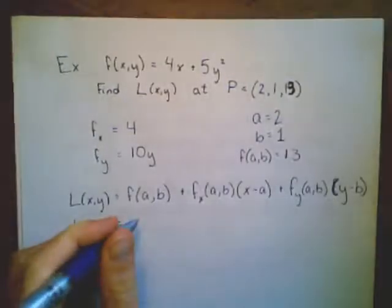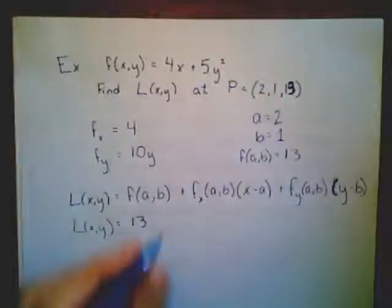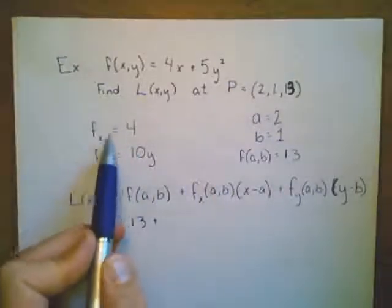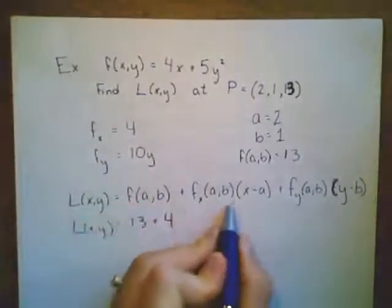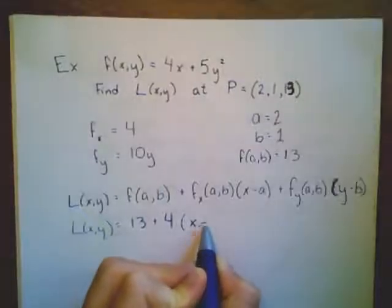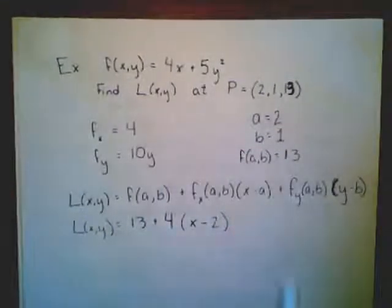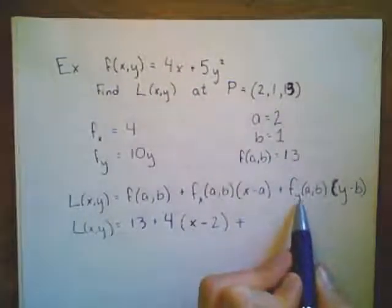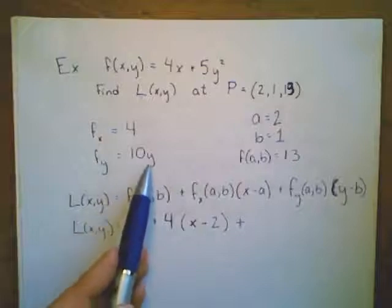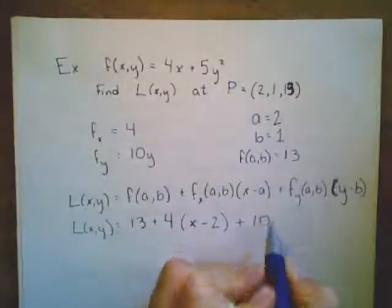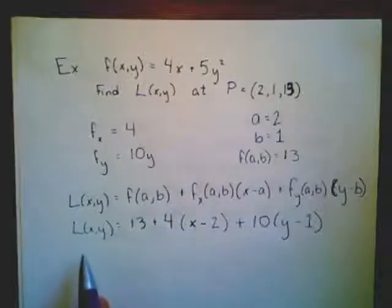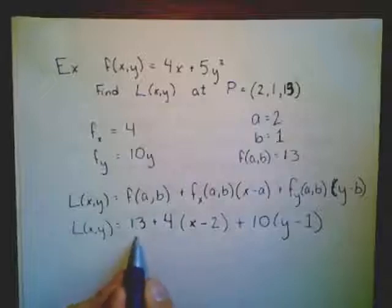So that means for our linearization, l of x, y, my f of a, b is just 13, plugging in my point value into my function, plus my partial derivative with respect to x at the point a, b. Well, it turns out it doesn't matter. No matter what, my partial derivative with respect to x is going to be equal to 4. So this becomes 4. Next, I have x minus a. The x is my x variable that stays a variable, and we know what a is. a is equal to 2. And I do the same for the next term. My partial derivative with respect to y evaluated at the point a, b. We found that the partial derivative with respect to y is equal to 10y. And I'm plugging in where y equals 1, so that's just 10. And then I get y minus b, which is 1. And we have found the linearization.